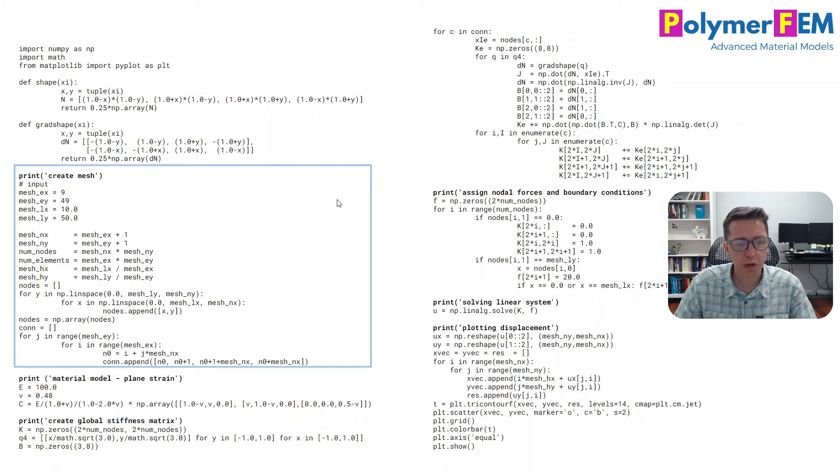And the next portion here is creating the mesh. So this is a problem-specific portion and it sets everything up in this way and has the connectivity matrix that we will use later.